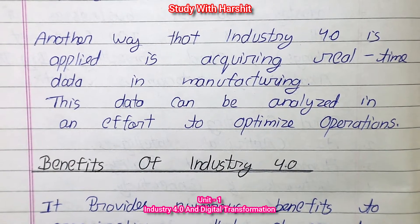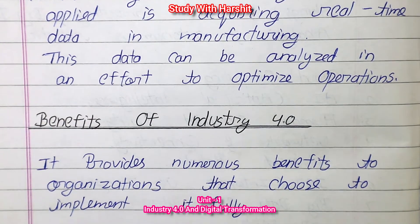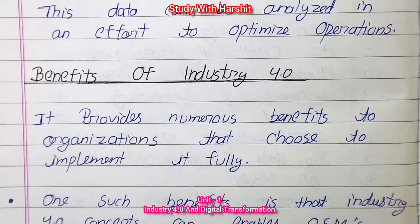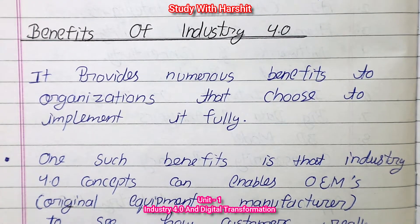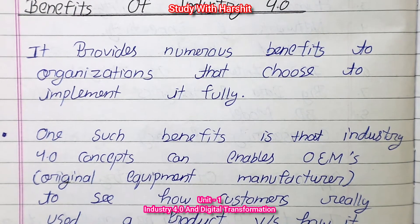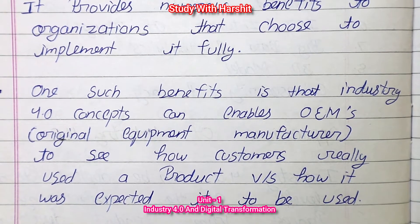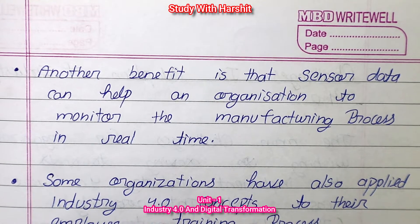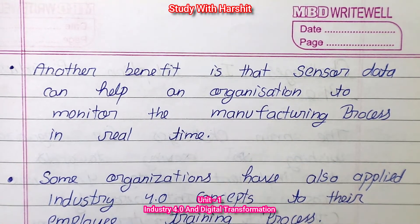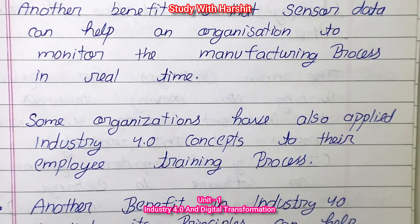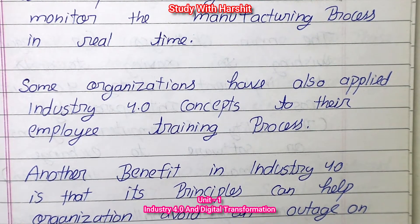Benefits of Industry 4.0: It provides numerous benefits to organizations that choose to implement it fully. Industry 4.0 concepts enable OEMs to see how customers really use a product versus how it was expected to be used. Sensor data can help an organization monitor the manufacturing process in real-time. Some organizations have also applied Industry 4.0 concepts to their employee training processes.